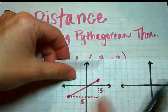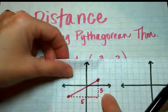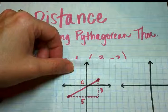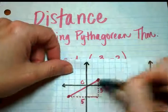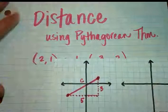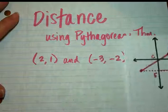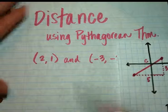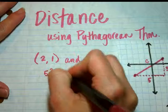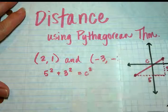So now that we have our two sides, we're going to use Pythagorean Theorem to figure out the length of the hypotenuse, which is going to be the distance between those two points. So from here, you're just going to use Pythagorean Theorem. So we have 3 squared and 5 squared. So I'm going to say 5 squared plus 3 squared equals C squared.